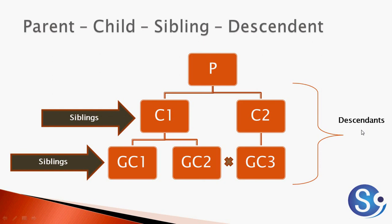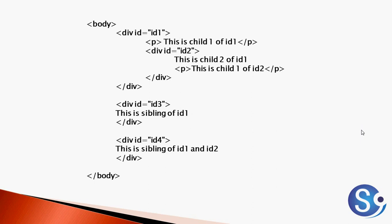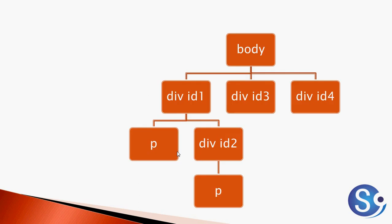Let's consider a simple HTML with a body which has ID1, ID2, ID3, and ID4. ID1 again has the children of P and ID2. This complete hierarchy can be represented as: body has children ID1, ID3, ID4; ID1 has children P and ID2; and ID2 has the child P.